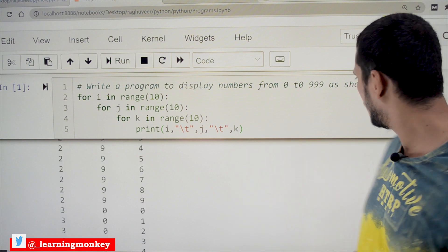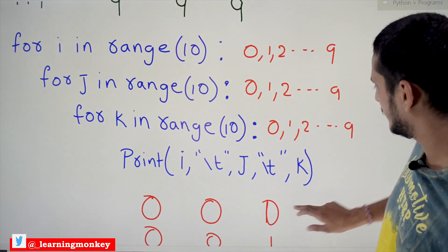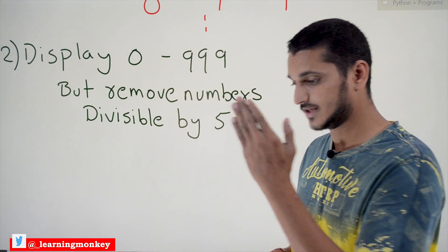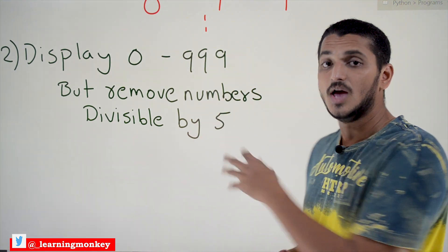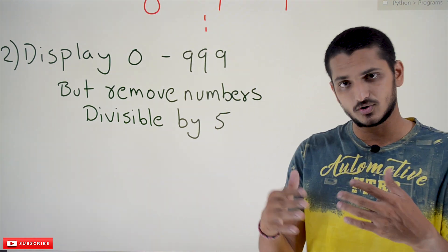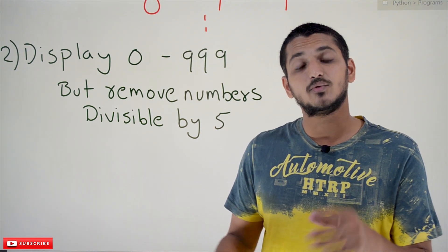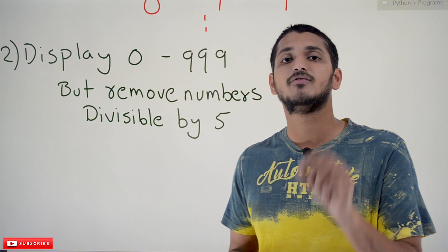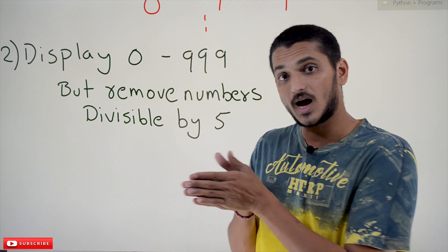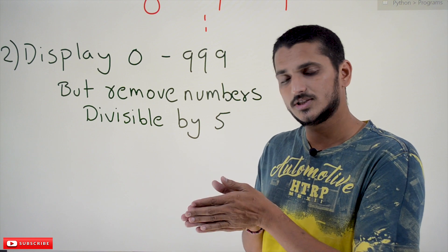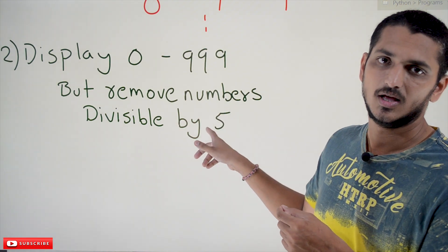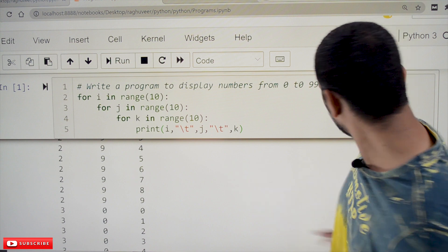Coming to our next example, which is very similar: we have to display the numbers from 0 to 999 in the same three-digit tab-separated format, but we have to eliminate the numbers that are divisible by 5. A number is divisible by 5 only if its last digit is 0 or 5, and in our loop structure k represents the last digit — so that is the logic we will use here.